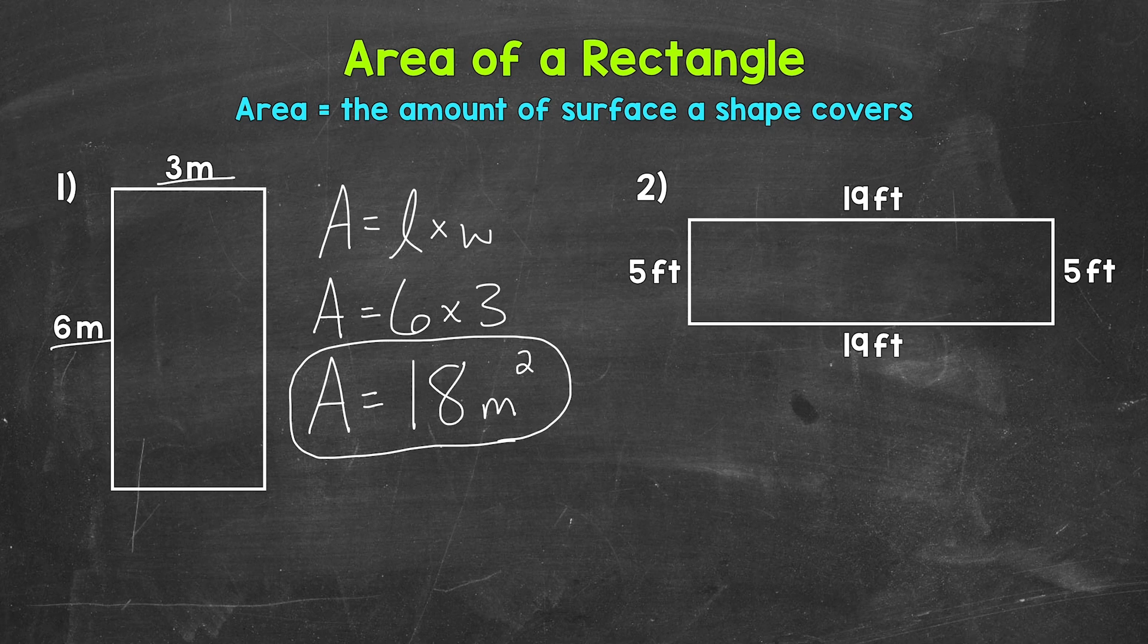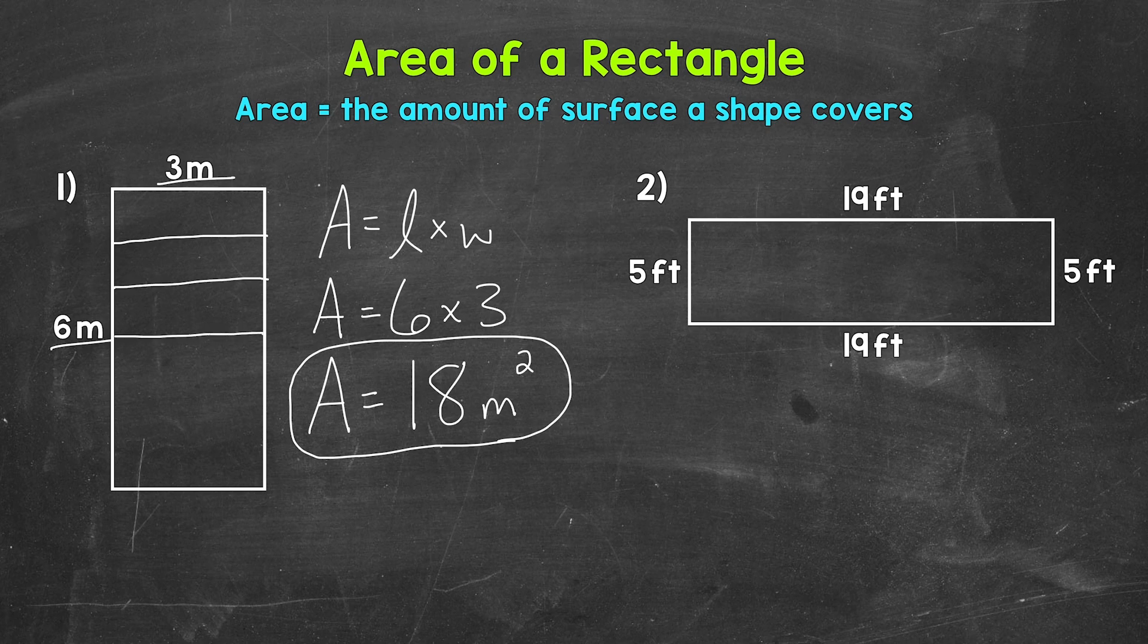Before we move on to number 2, let's take a look at why we do length times width and look at a visual of area. We have 6 meters by 3 meters, so let's draw these out, starting with 6 meters. So I'm going to mark each meter here. So 1, 2, 3, 4, 5, and 6. So we have 6 meters there.